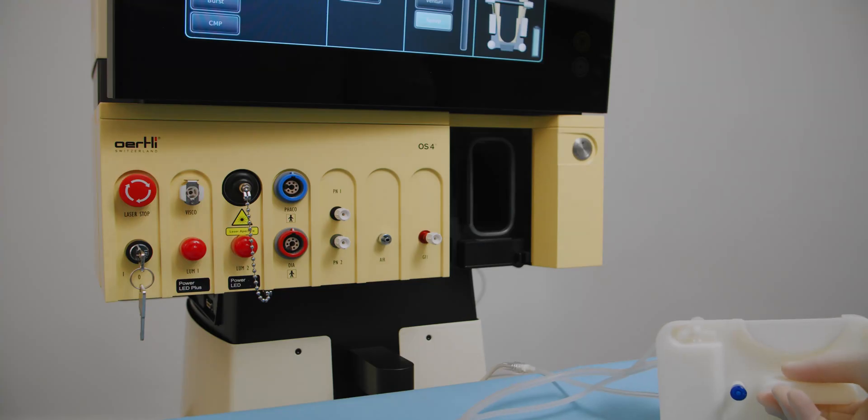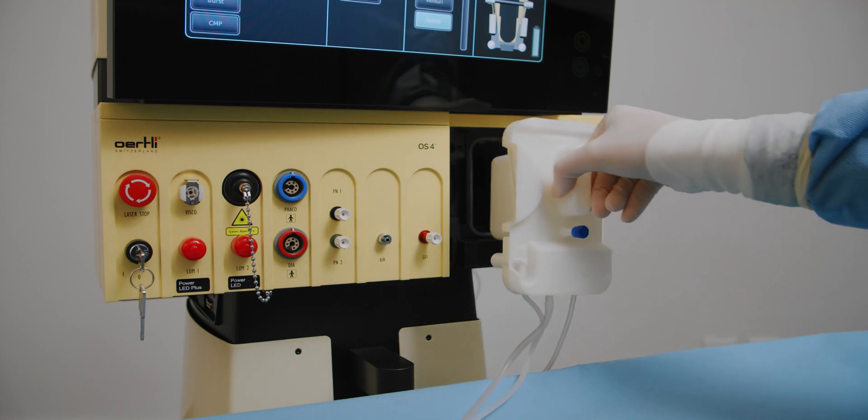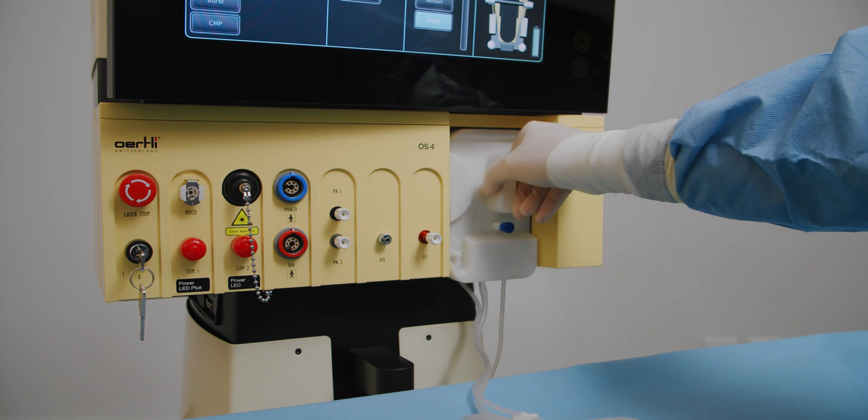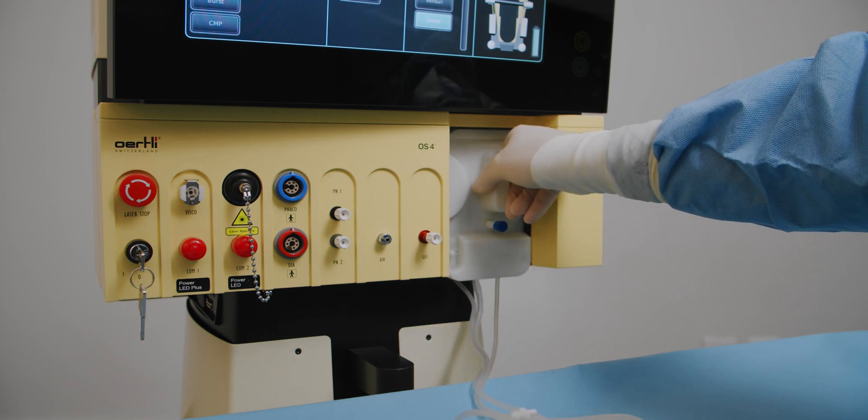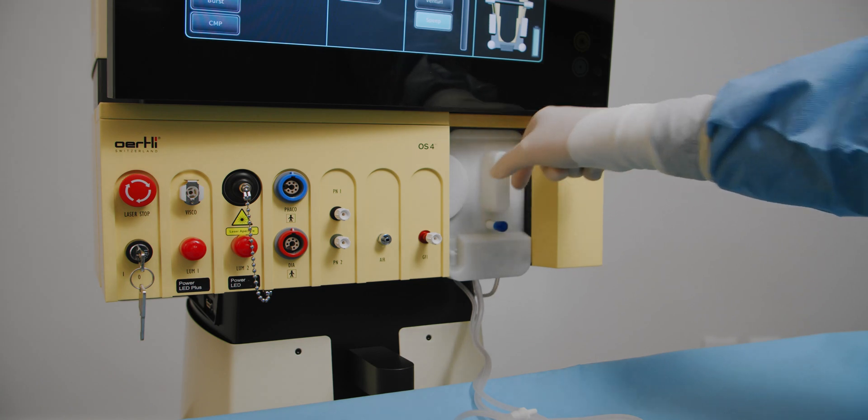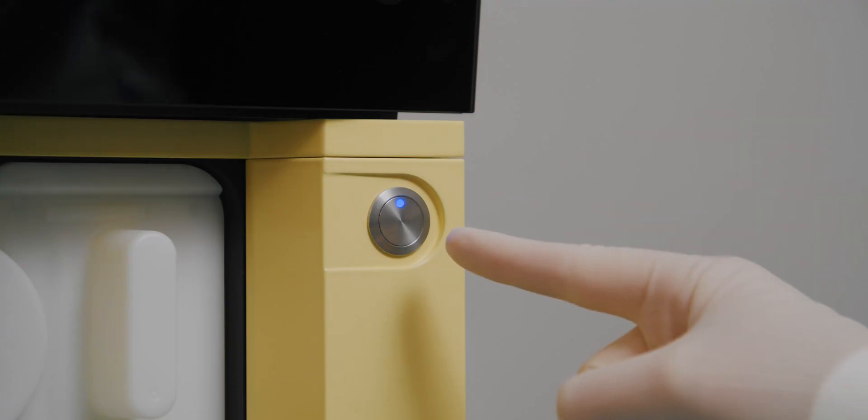Insert the OS 4 cassette into the cassette slot. Push the cassette with the tubes pointing downwards into the cassette slot as far as it will go. The cassette will be automatically pulled in. Once inserted, ensure the light is blue.